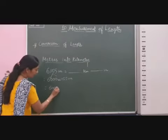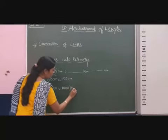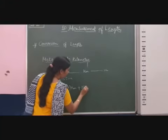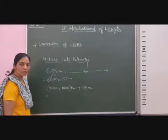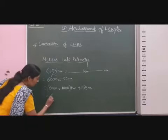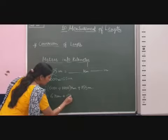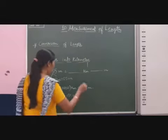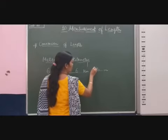So, 6000 divided by 1000 kilometers plus 155 meters. 6000 divided by 1000 is equal to 6 kilometers plus 155 meters. So in the blanks we write 6 kilometers and 155 meters.